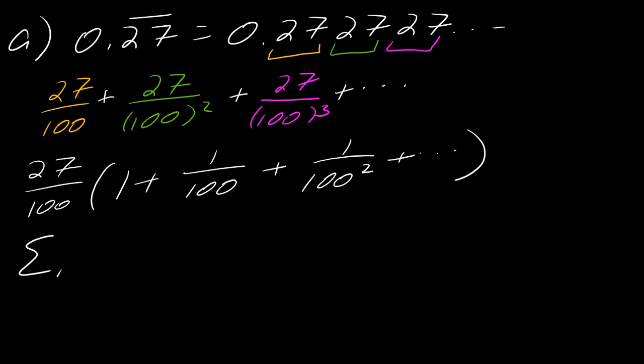So I can rewrite my geometric series. I can have n equals 0. I've got 27 over 100 times 1 over 100 to the nth. So there's my series.